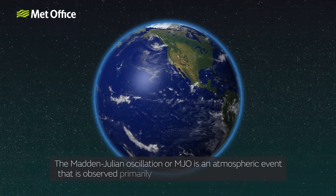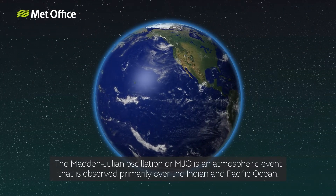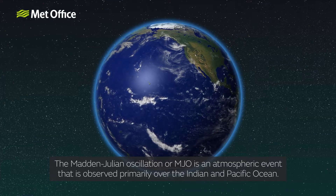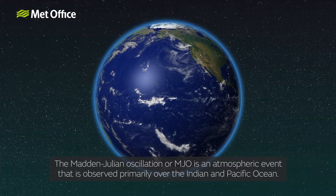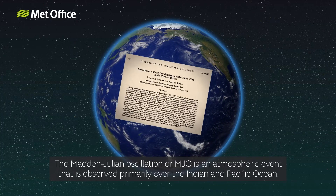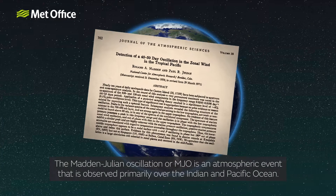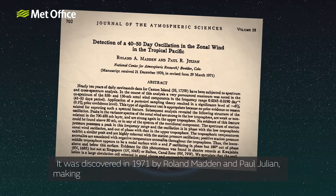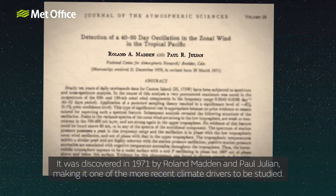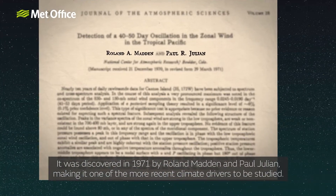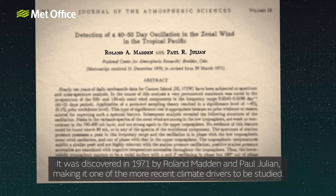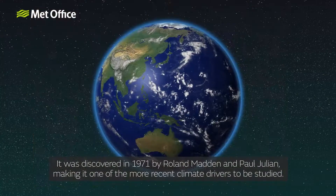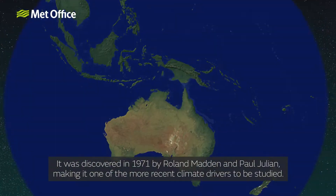The Madden-Julian Oscillation, or MJO, is an atmospheric event that is observed primarily over the Indian and Pacific Oceans. It was discovered in 1971 by Roland Madden and Paul Julian, making it one of the more recent climate drivers to be studied.